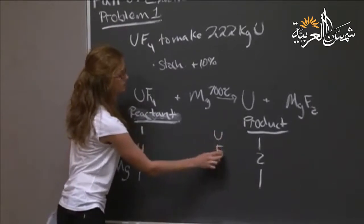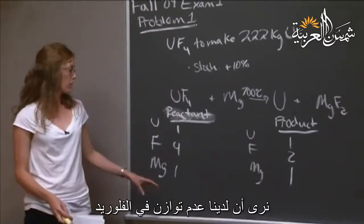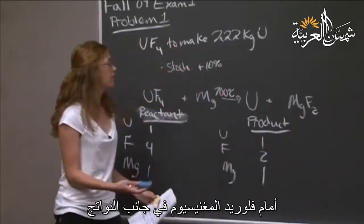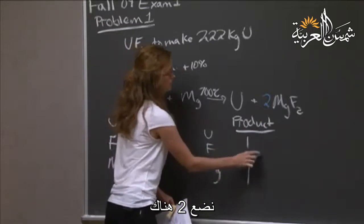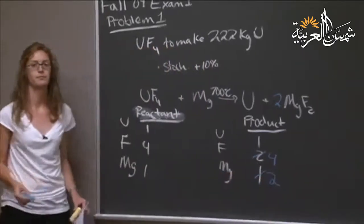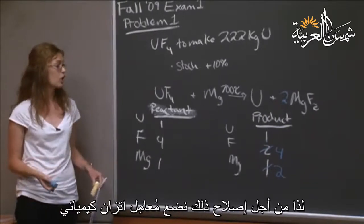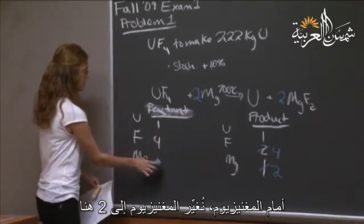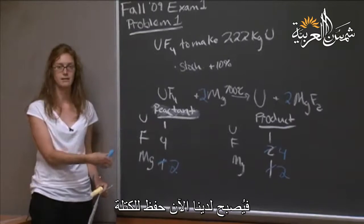We see that we have an imbalance in fluoride. To fix that, we put a stoichiometric coefficient of 2 in front of the magnesium fluoride on the product side in order to have four fluorides. But we also have to fix the magnesium — although we fixed the fluoride, we now have an imbalance in magnesium. So we put a stoichiometric coefficient of 2 in front of the magnesium on the reactant side, and we see that we now have conservation of mass — both sides are balanced.